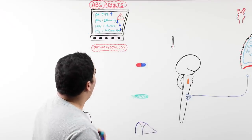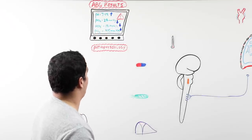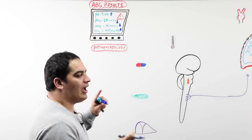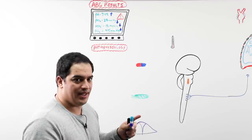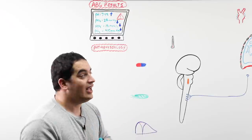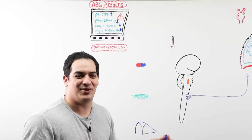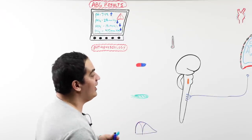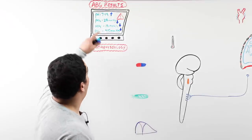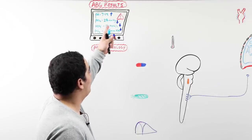So if we had this ABG, we know there is alkalemia — an up-going pH. How do we determine the primary cause? If CO2 is going in the opposite direction of the pH, it's a respiratory disorder. If bicarb is going in the same direction as the pH, it is a metabolic disorder. We can confirm this is respiratory alkalosis because the CO2 is going in the opposite direction of the pH.